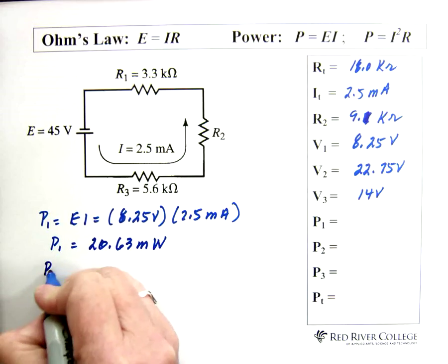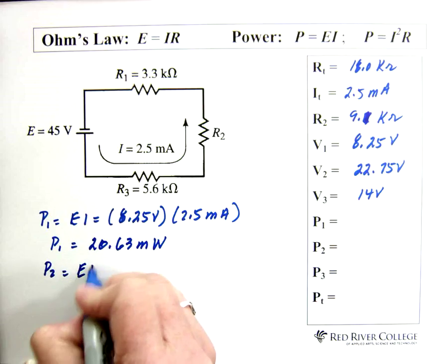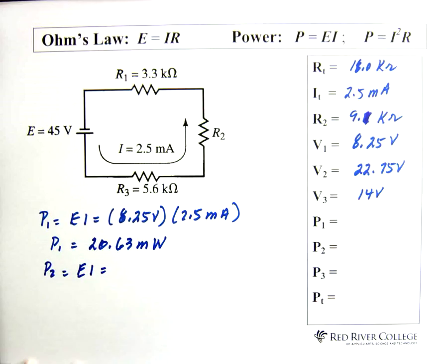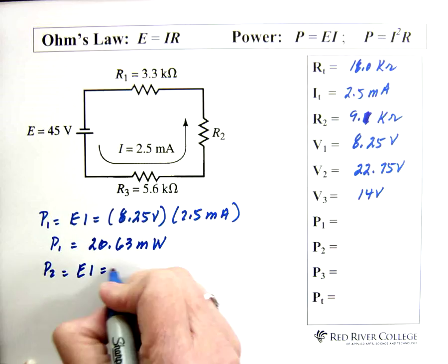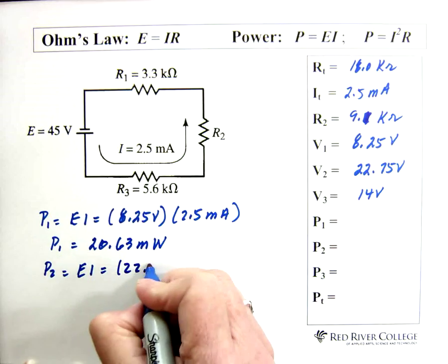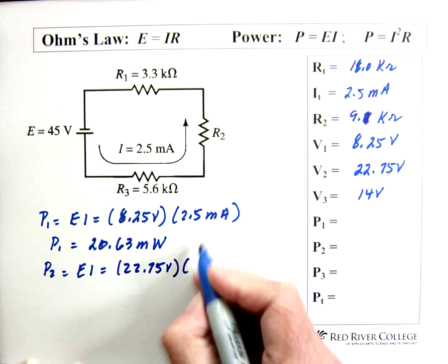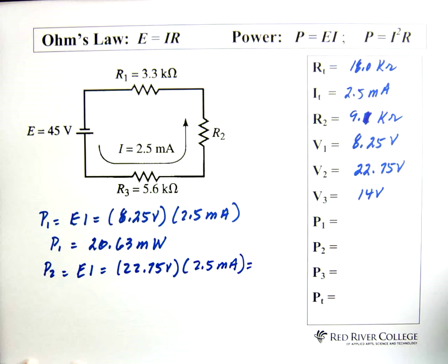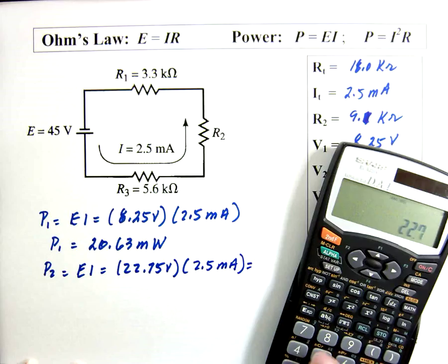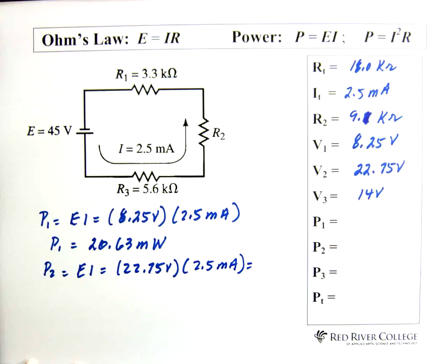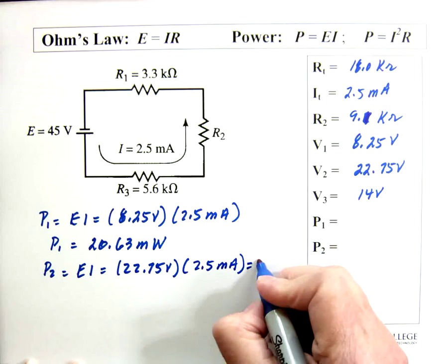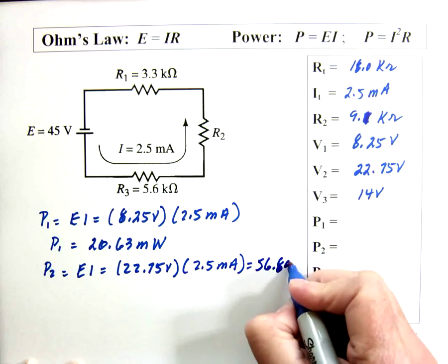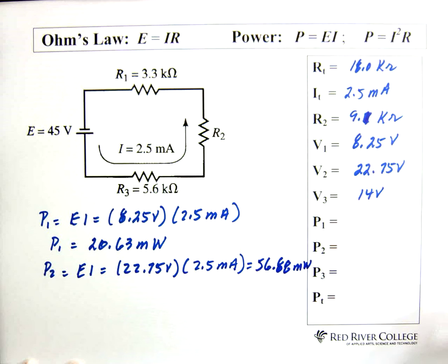Power 2. Again, EI equals. So we have 22.75 volts times 2.5 milliamps equals 22.75 times 2.5 exponent negative 3 equals 56.88. And that's milliwatts. And that's milliwatts.